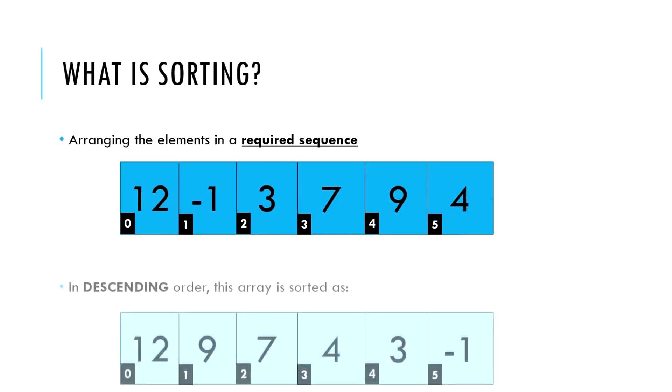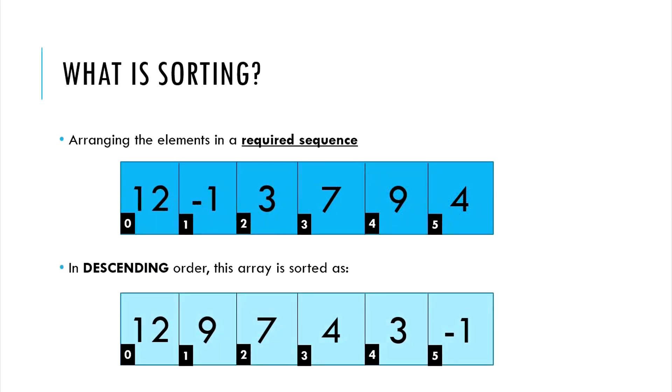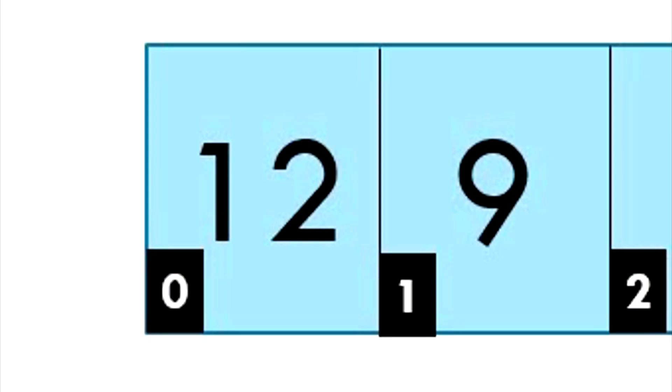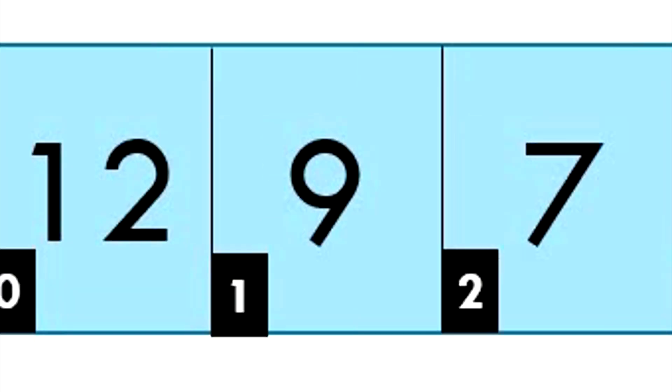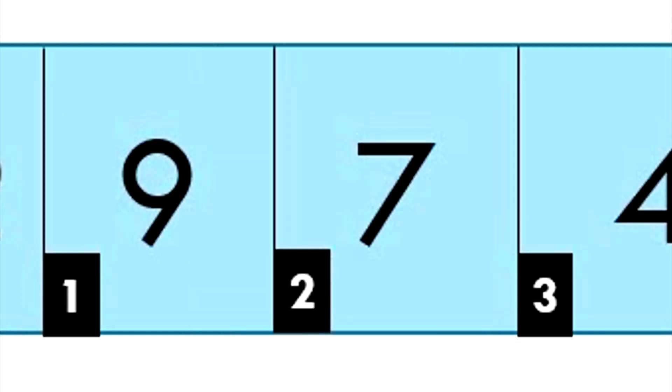Similarly, if we were to sort this array in a descending order, we would arrange the highest number, 12, at the beginning of the array, at index 0, the next highest number, 9, at index 1, and number 7 at index 2, and so on.